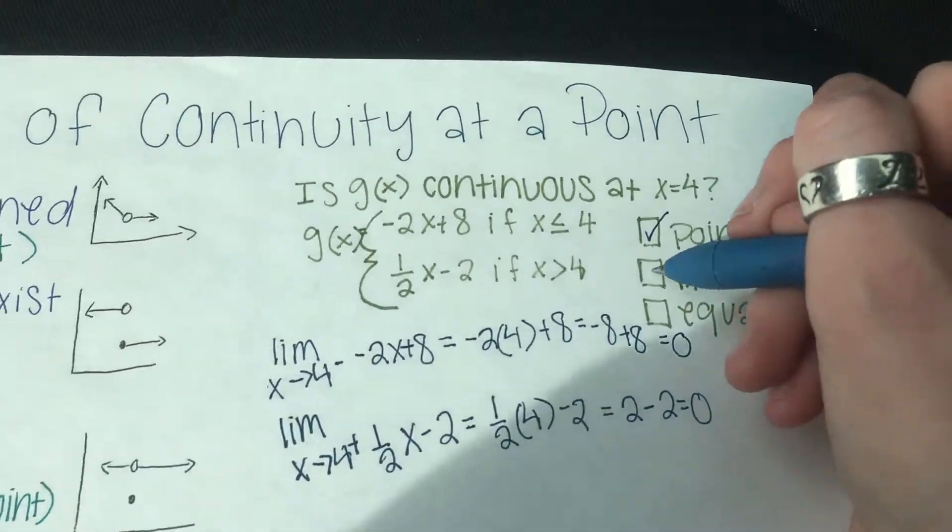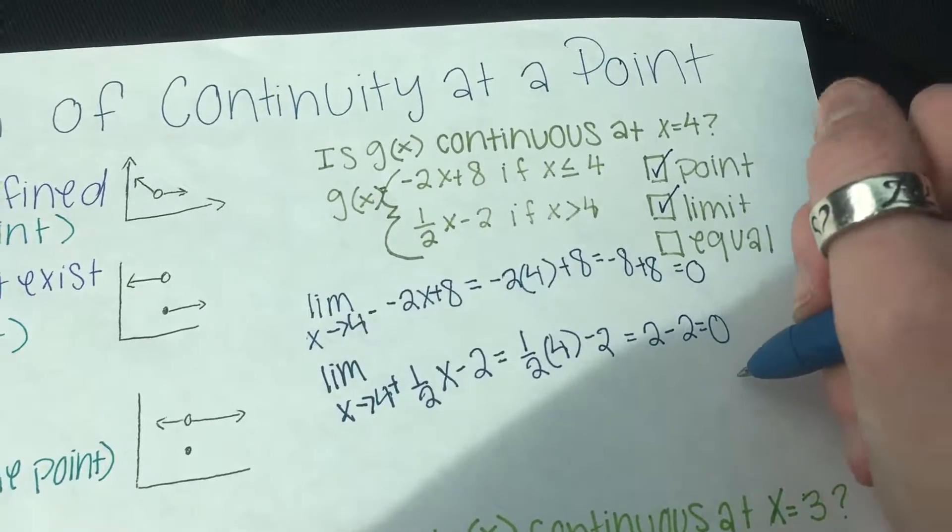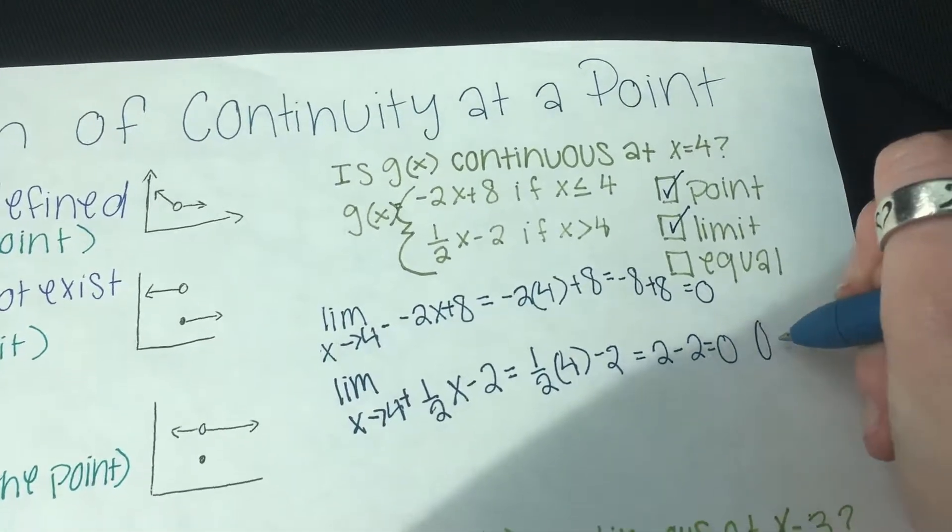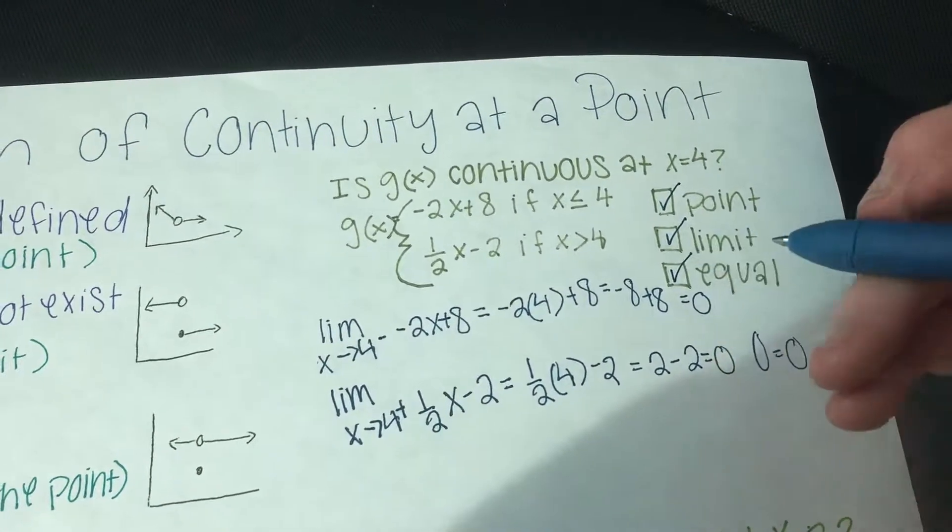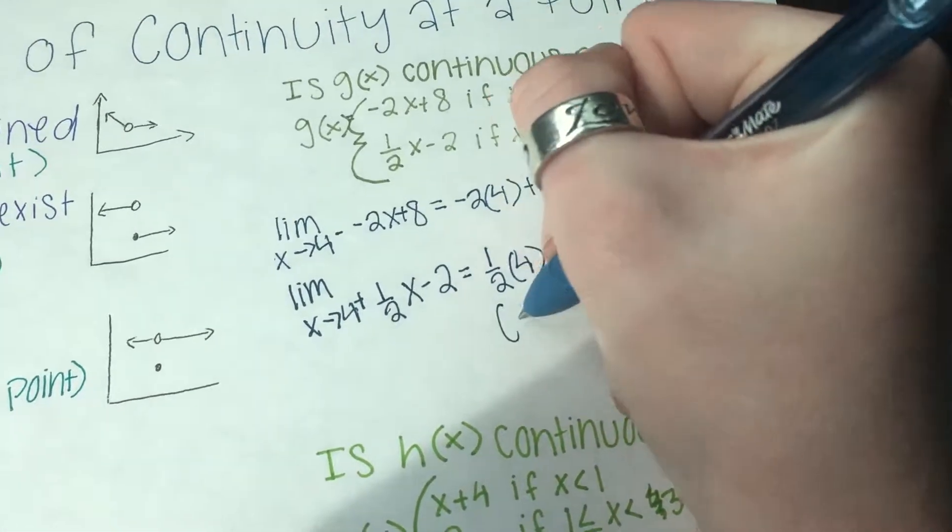And then that gives us 2 minus 2, which equals 0. So that does give us a limit. So then we have to see if the point is equal to each other, and 0 does equal 0. So this point is continuous.